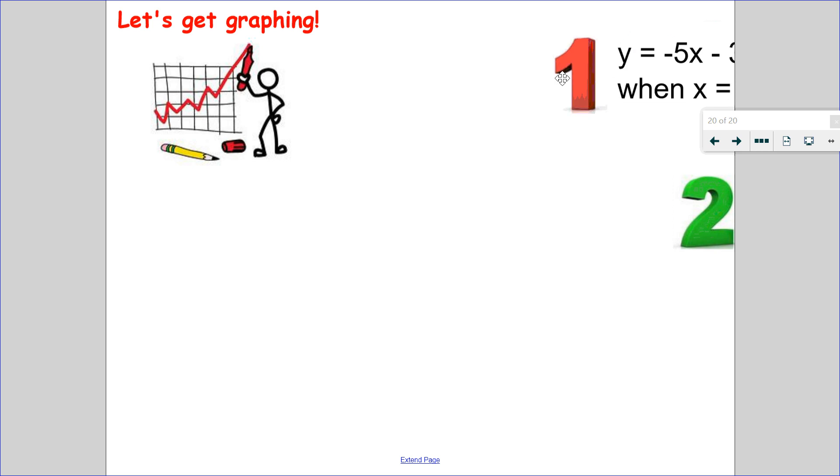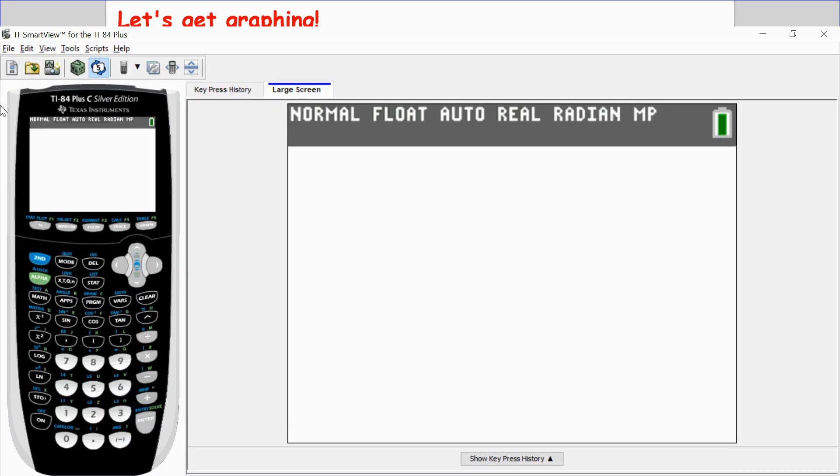Let's do example number one. So in this example, I have the equation y equals negative 5x minus 3, and I want to know when x is equal to 1, what is the y value? So let's go into our graphing calculator.